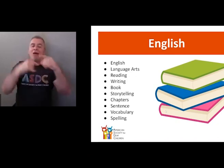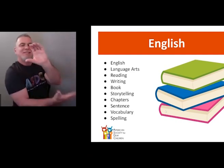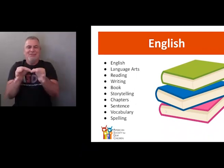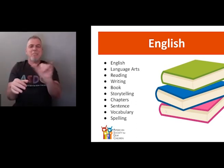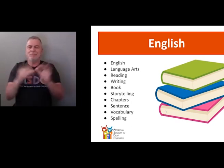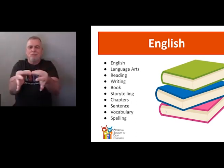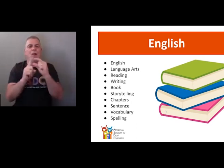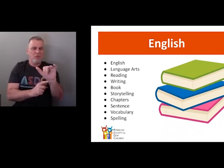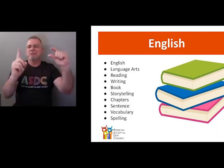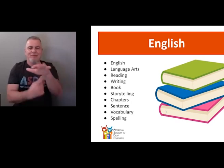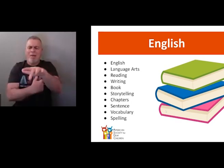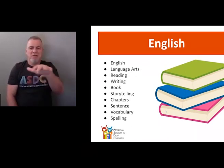If you're talking about chapters in a book, this is chapter — some people sign it like this using a C handshape going down the page. This is the sign for sentence — in English, you write sentences. The handshape you use is what we call an F handshape, and that would be sentence or language. Vocabulary — also the sign for word. So you have the pointer finger and the G handshape put together. This is the sign for spelling — the little movements of the fingers signify every letter in the word.